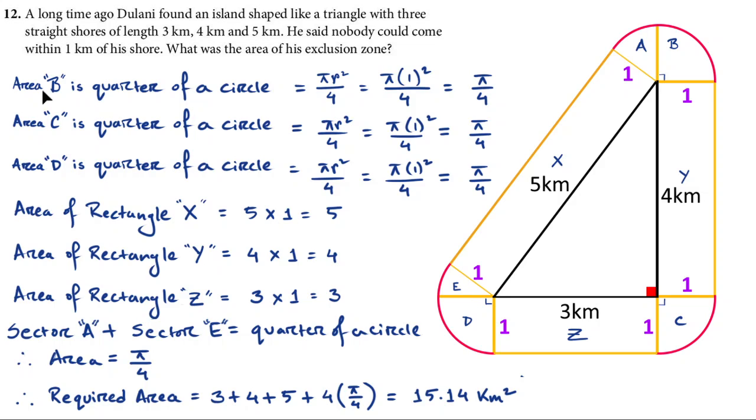So let's solve the area for B. Area B is quarter of a circle which is equal to pi r square by 4. As we know that area of a circle is pi r square therefore quarter of a circle will be pi r square divided by 4 and we know that the radius is 1 kilometer that gives us pi by 4. That means the area for space B is pi by 4 and C and D are all similar to that as well. C and D are all quarter of a circle hence their area is pi by 4.